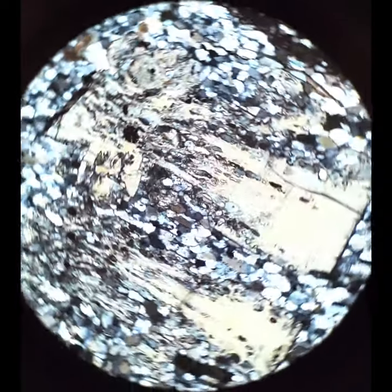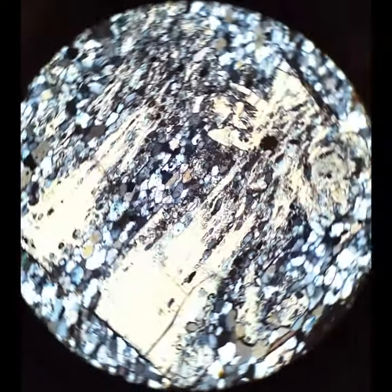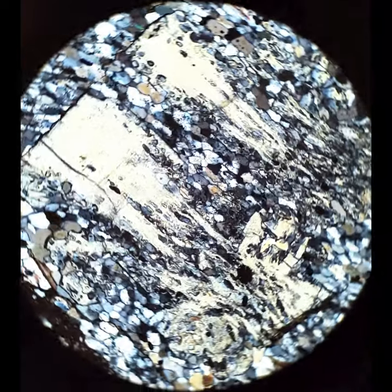The areas that have few inclusions have overgrown or replaced sheet silicates, muscovite, chlorite, and the areas that have more inclusions overgrew quartz.